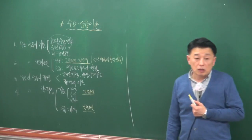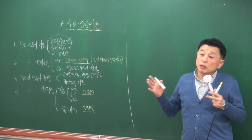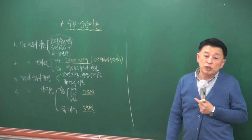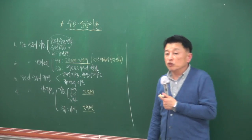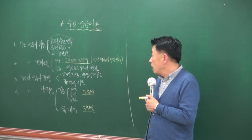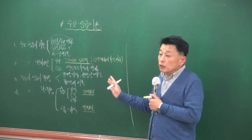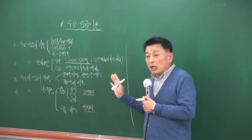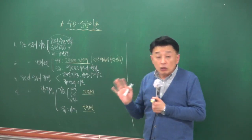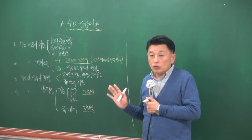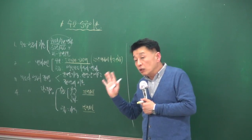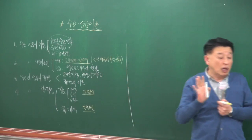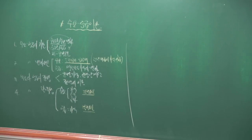경제는 논리가 정해져 있어서 바뀌는 게 없기 때문에 이해만 하면 문제를 맞출 수 있습니다. 계산이 어려우면 계산은 버려도 되고, 이론만 맞춰도 됩니다. 경기변동은 어렵지 않게 출제되므로 다섯 문제 중 네 문제는 맞출 수 있습니다.